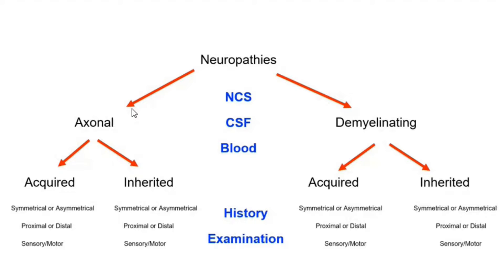Some demyelinating neuropathies, for example DADS or anti-mag neuropathies, have distal predominant symptoms in terms of tremor and ataxia when they walk. So these patients will present with balance problems and tremor. You get a decent understanding as to what's going on clinically.